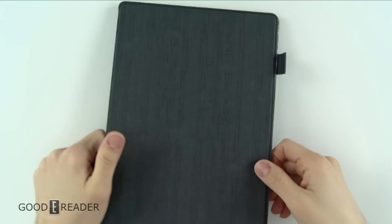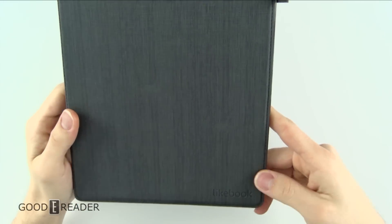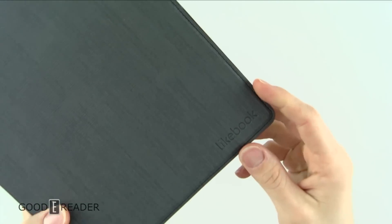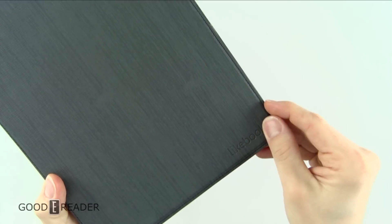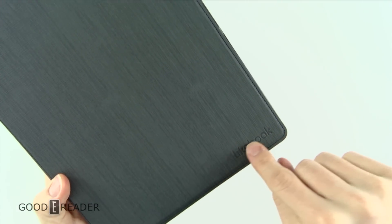First thing first is the case. Let's take a look at it. This comes bundled with the unit and you don't have to purchase it separately. You'll see that Likebook is engraved on the bottom.